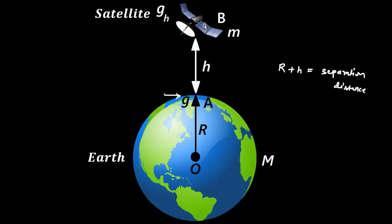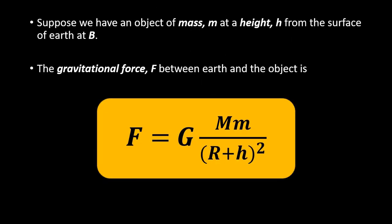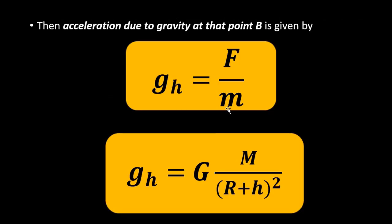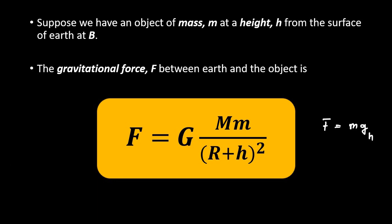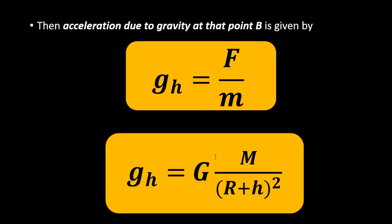As per Newton's second law, this gravitational force is also equal to F = m × g_h — the mass of the satellite multiplied by the acceleration due to gravity g_h. So g_h equals F divided by small m, which equals GM divided by (R + h) squared. When we divide by small m, the m's cancel, and we have g_h = GM / (R + h)².